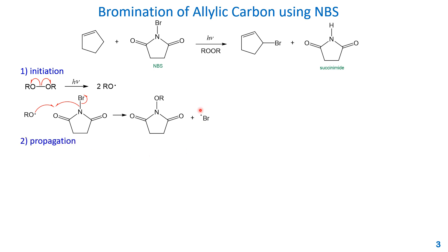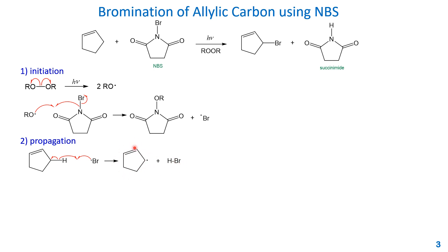In propagation, the bromine radical reacts with the alkene by breaking the carbon–hydrogen bond at the allylic position — homolytic cleavage of this single bond gives two radicals: one on the allylic carbon and one is a hydrogen radical. The hydrogen radical combines with the bromine radical to form the intermediate hydrogen bromide. This intermediate hydrogen bromide then reacts with NBS to form succinimide and a bromine molecule, Br₂.